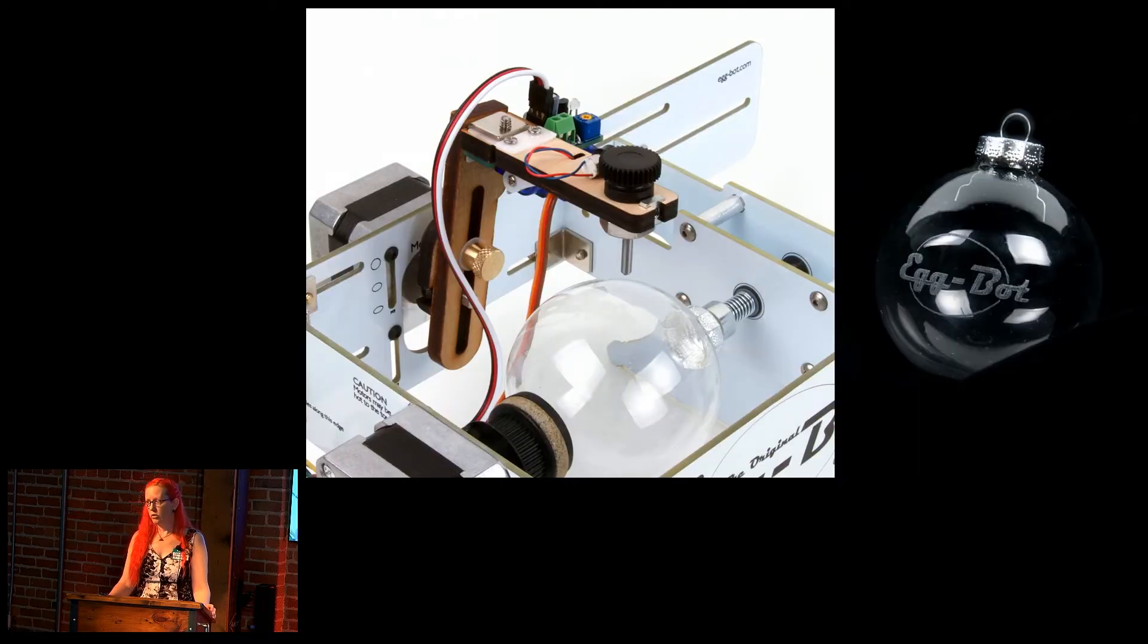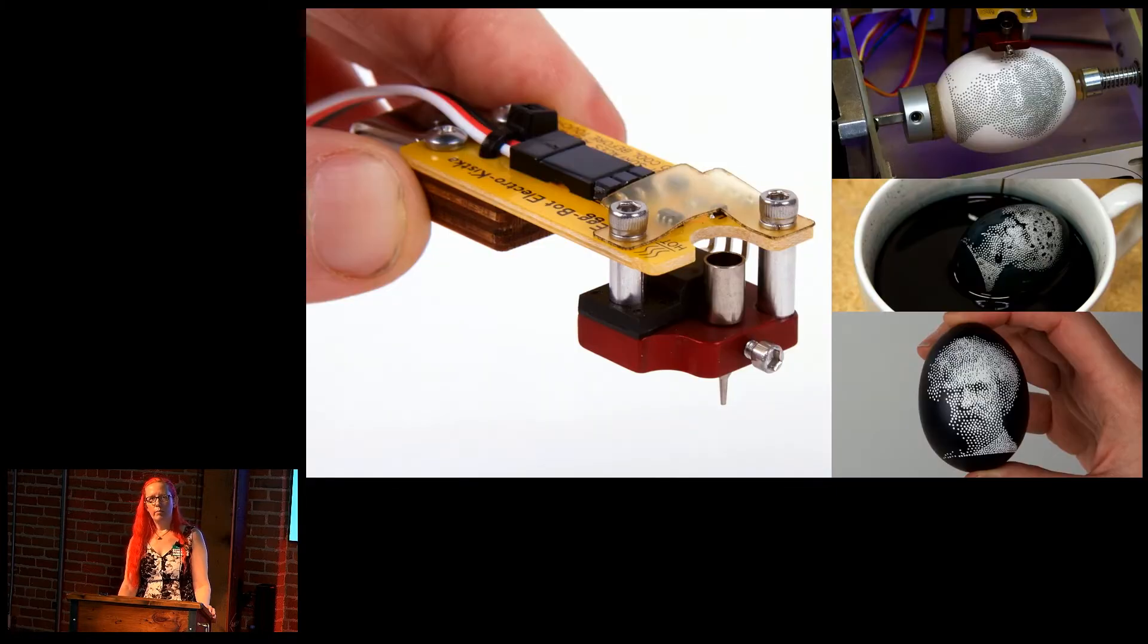We also made some accessories for the Egg Bot. This is a diamond engraving tool that works on hard surfaces like glass. We made a Kistka, drawing from the tradition of Pysanky, the Ukrainian dyed Easter eggs. So you draw on the egg with wax, and then dye it, and then remove the wax.